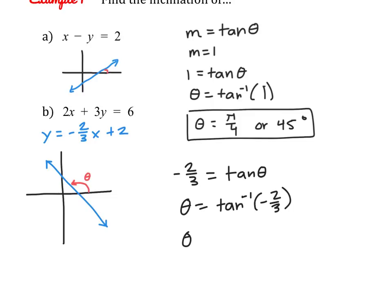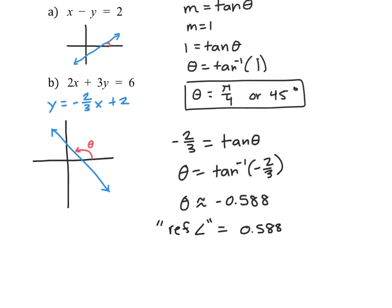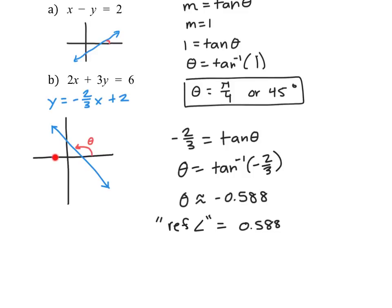This gives us a decimal approximation of about negative 0.588, which obviously is not this angle. First of all, we need a positive angle, and we need it to be an obtuse angle rather than an acute one. So I can use the absolute value of this as our reference angle — positive 0.588. Then to find this angle, I do pi radians minus the reference angle. So our angle is pi minus 0.588, which gives us approximately 2.5536 radians.